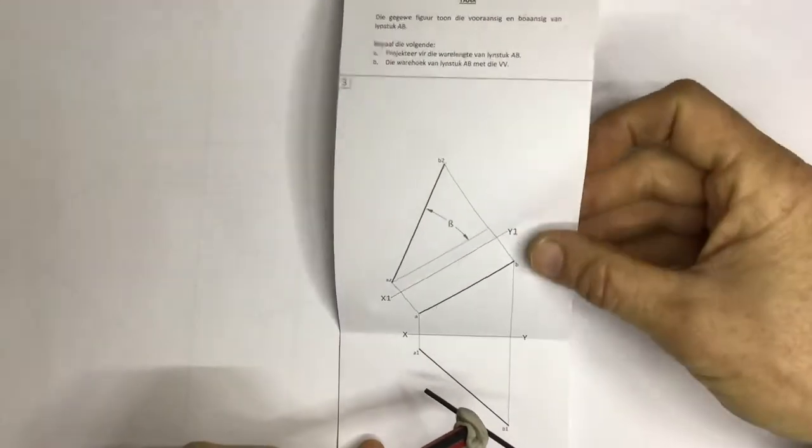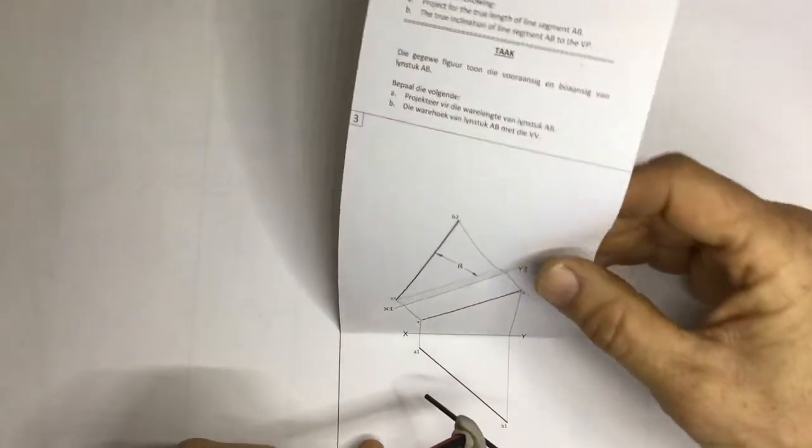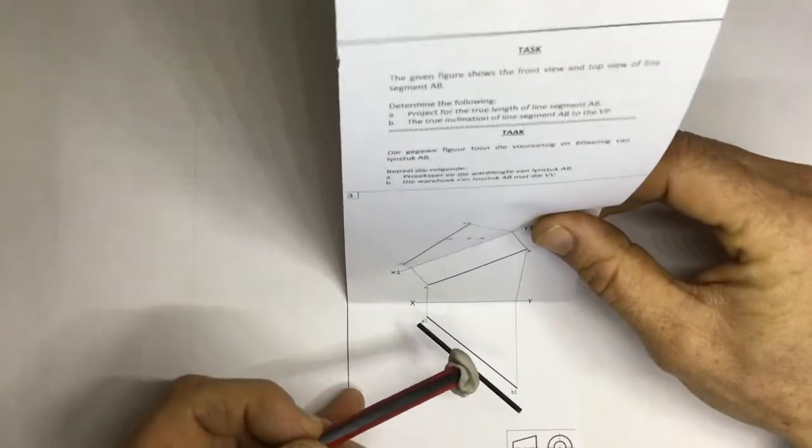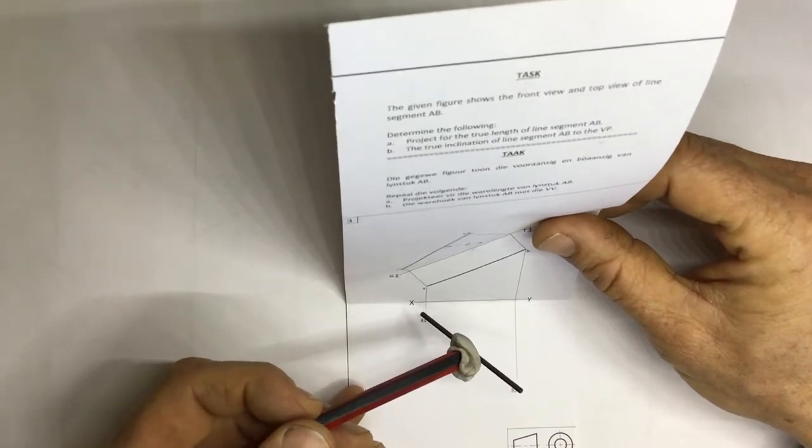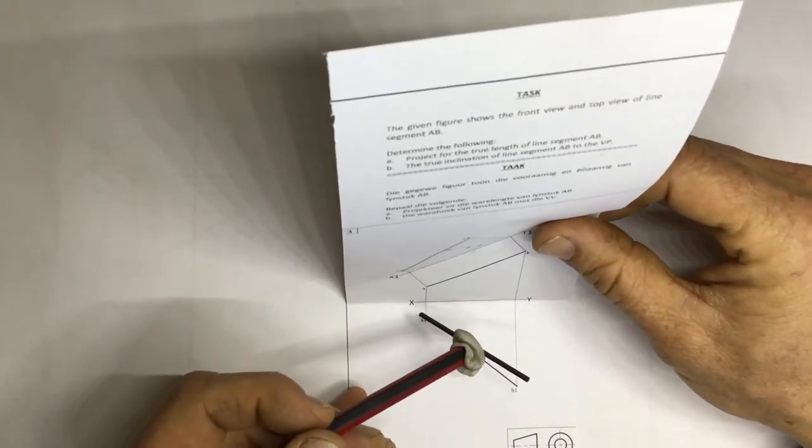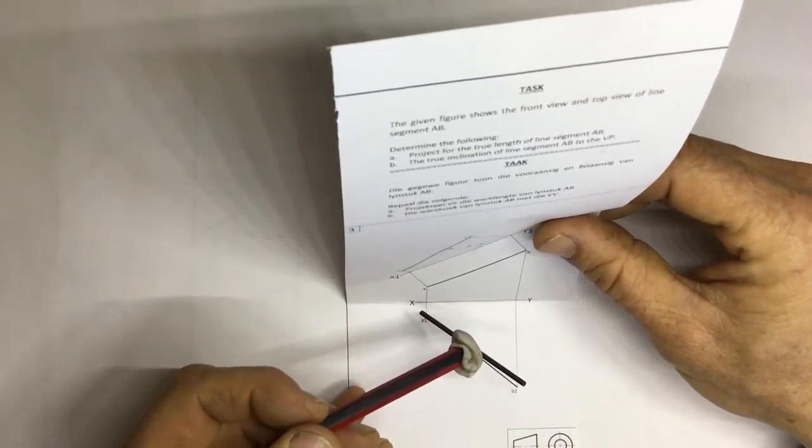So what do we need to have a look at? Let's just have a look at this line segment as it is in real life. Well, there it is. You can see that if I show it to you like that, you can see that I'm tilting this line.